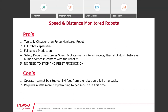With speed and distance monitored robots, the pros are that they're typically cheaper than force-monitored robots, you have full robot capabilities without selling yourself short on speed or precision, full-speed production, and safety departments actually prefer them because they shut down before the human comes in contact. Again, no need to stop production or have any downtime — just move close and move away and the robot continues its operation. The cons: the operator cannot be situated extremely close at a full-time basis since it will come to a complete stop in the red zone, and it requires a little more programming the first time you set it up.